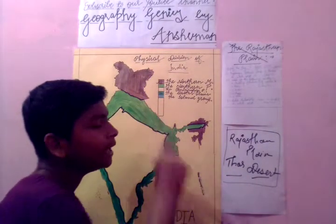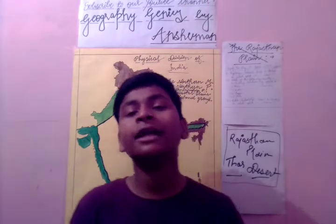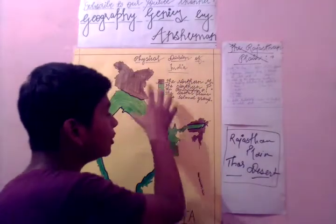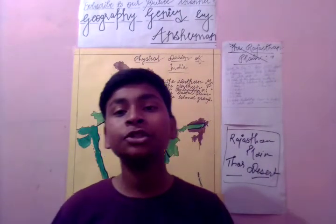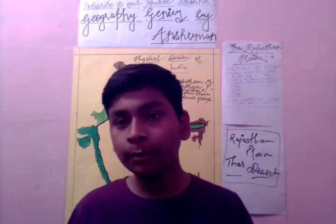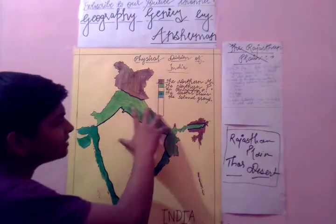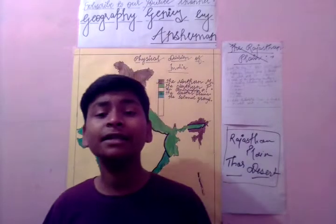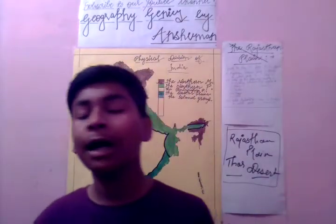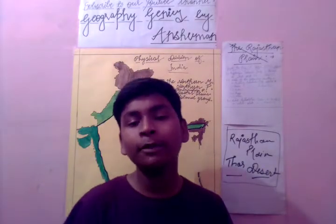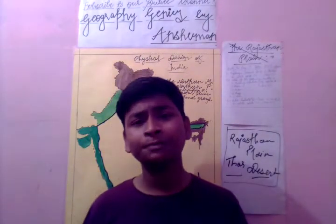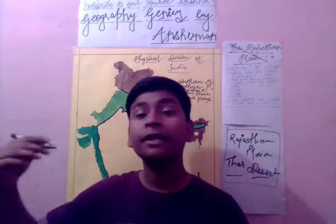This river originates from Gangotri — you may have heard about this from your grandparents. It is a very old religious story but I won't go into detail. The river originates from Gangotri and then flows to Haridwar. It is very huge in length and forms many tributaries — rivers like Ghagra, Gomti, and Yamuna are all tributaries of the Ganga.